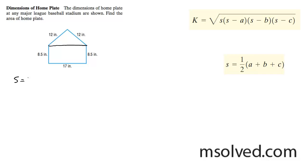So the top half for S, it's going to be one half. 17 plus 12 plus 12, which is going to be equal to, well, they have 20.5.